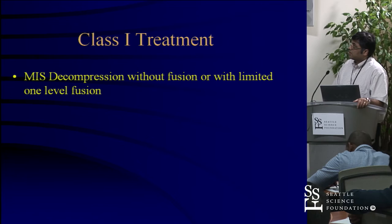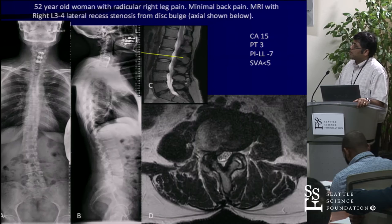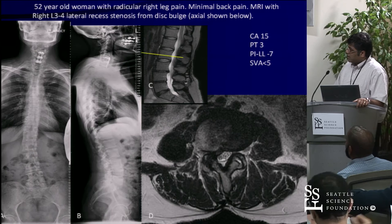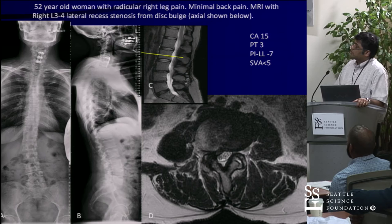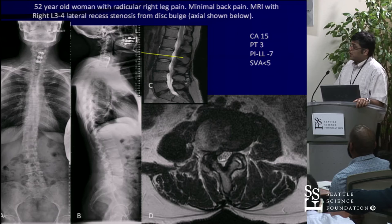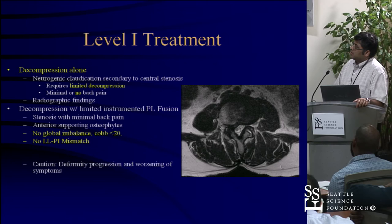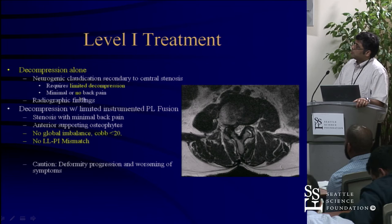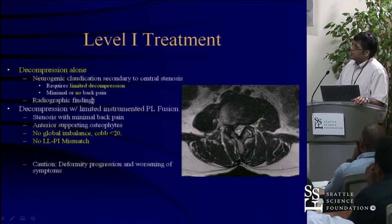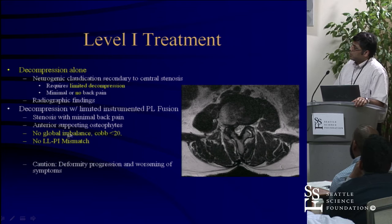This is a class one case where MIS decompression without fusion or with just a limited fusion is fine. The patient has a relatively mild curve with no real sagittal imbalance. The patient complains primarily of leg pain; there is a disc in the lateral recess. You could drop a tube, take out the disc, and don't need to do much else. For level one treatment: neurogenic nerve-related symptoms requiring limited decompression, little back pain, possibly a single-level fusion for a listhesis, no global imbalance, relatively small Cobb angles, no significant PI-LL mismatch.